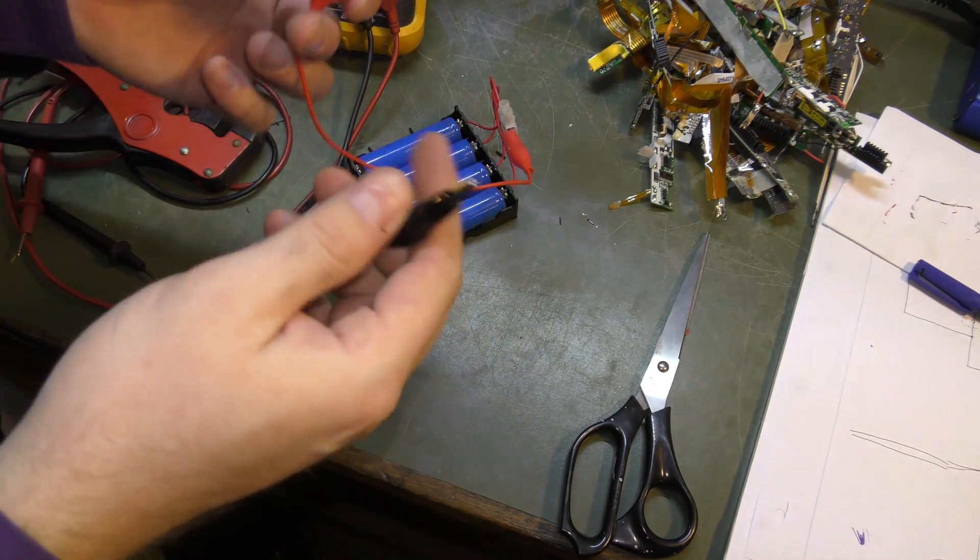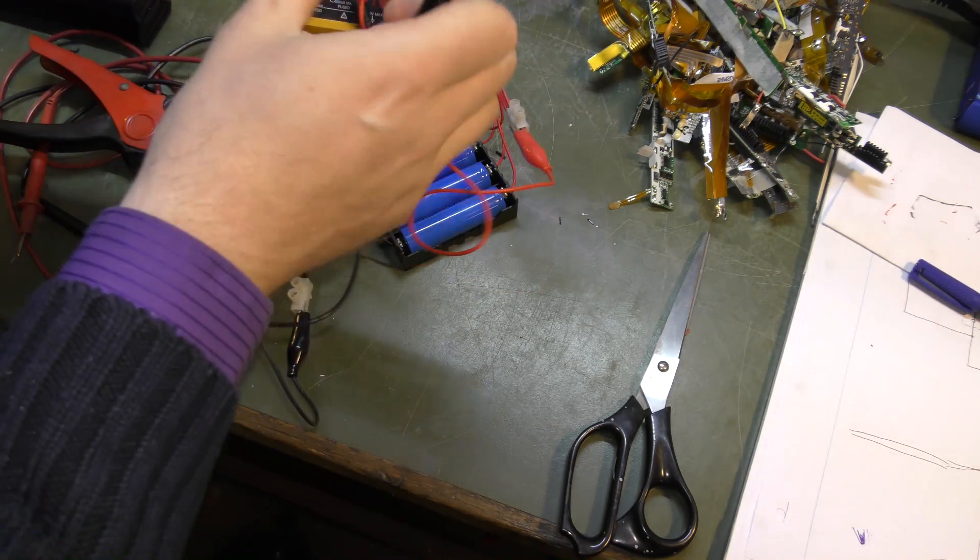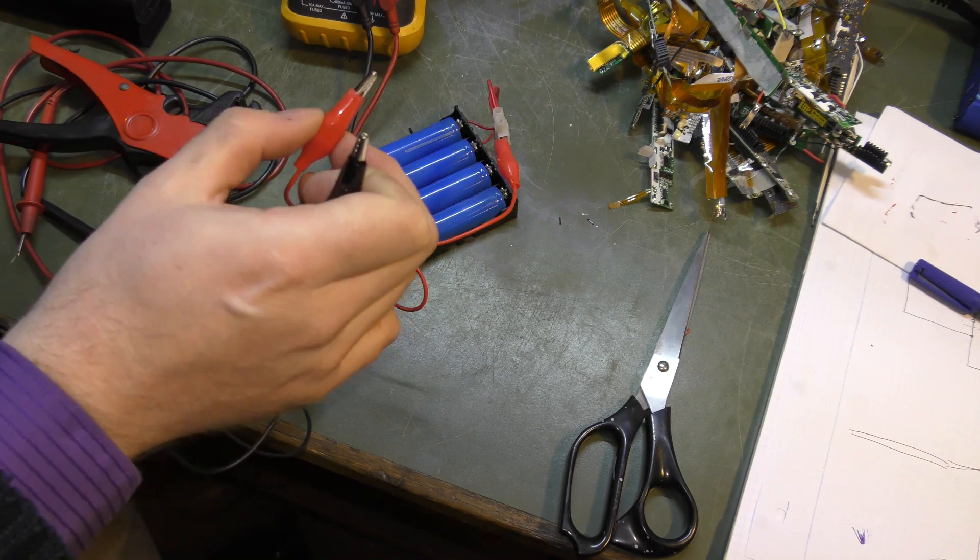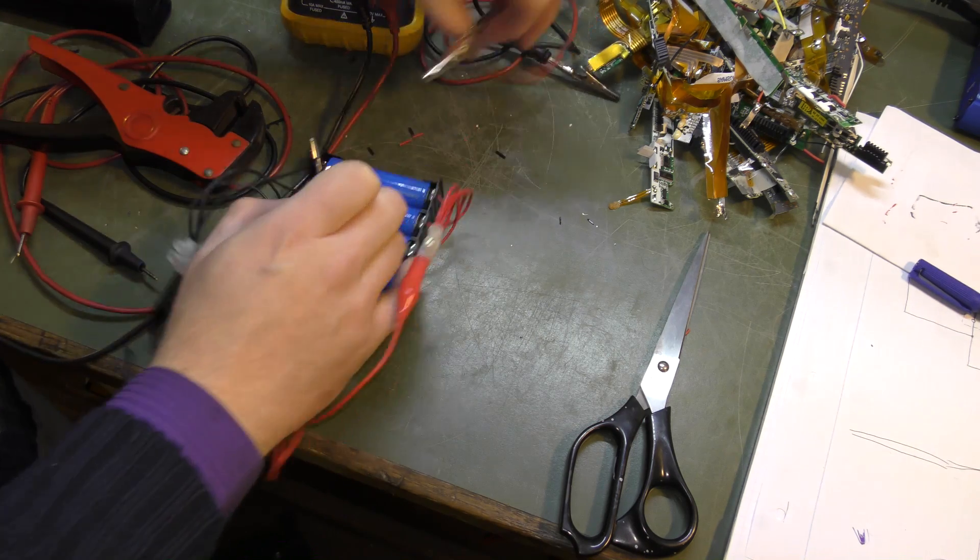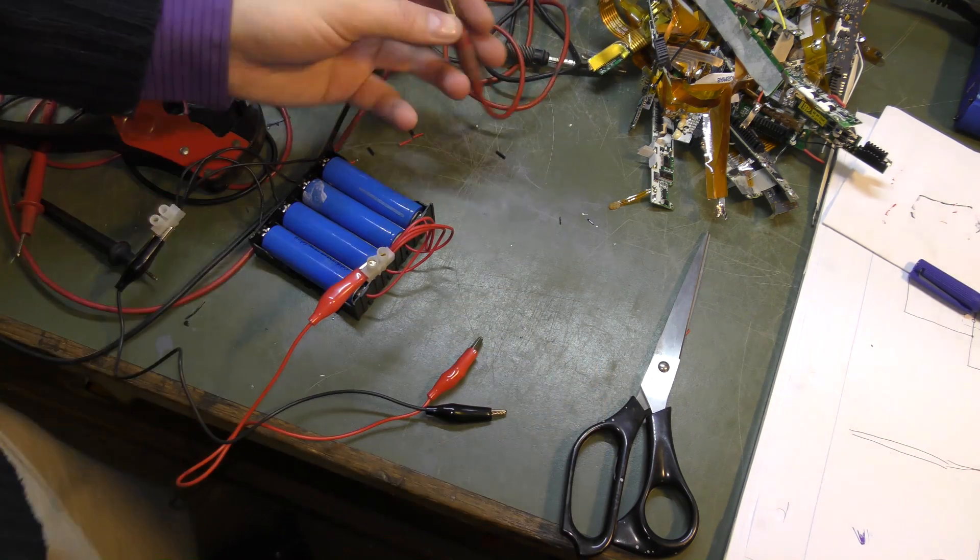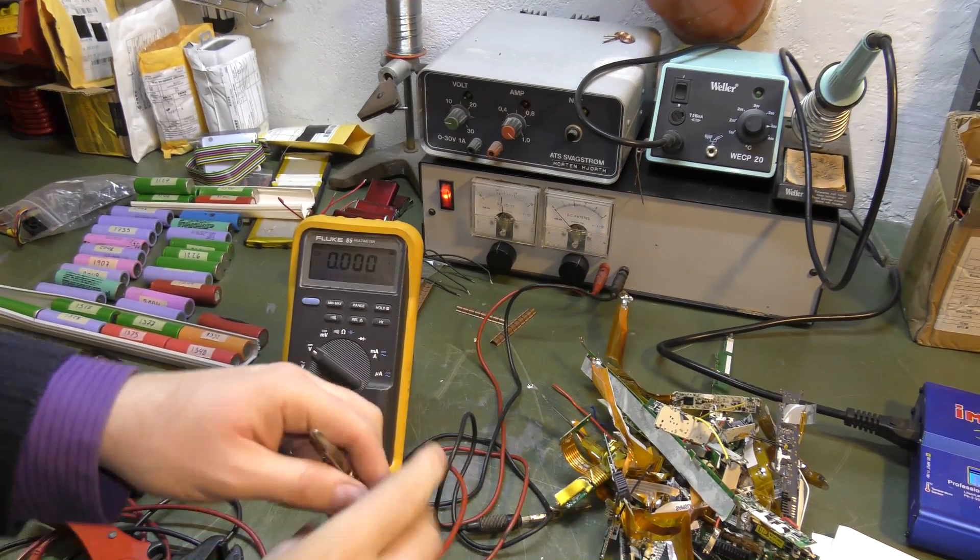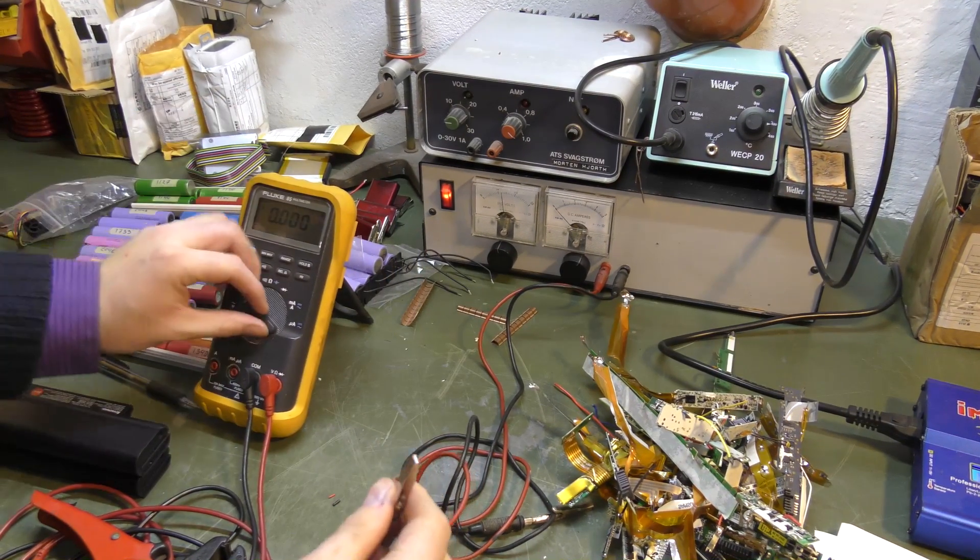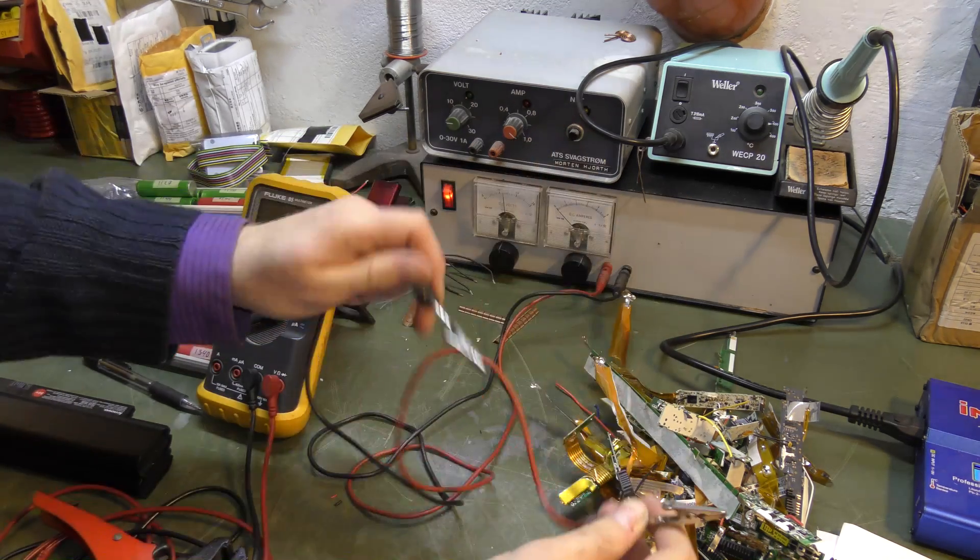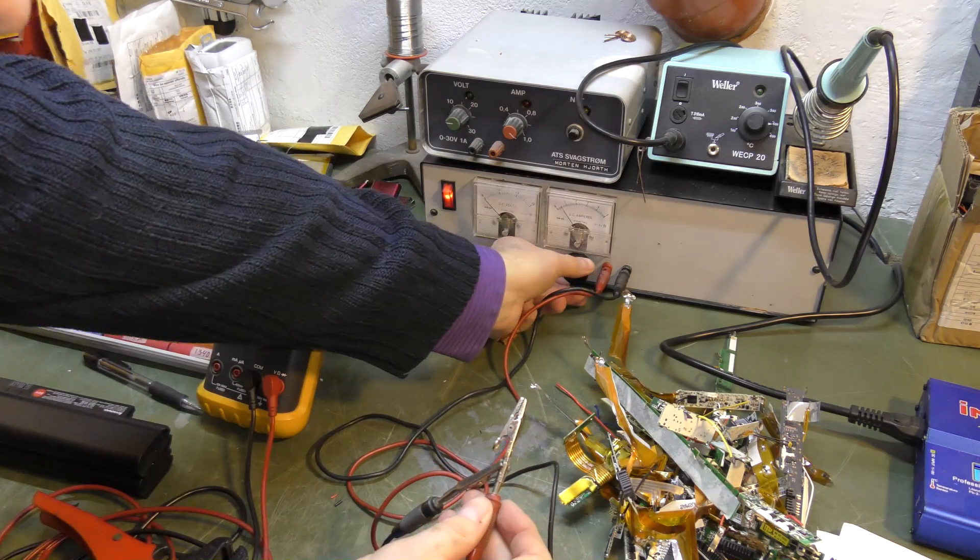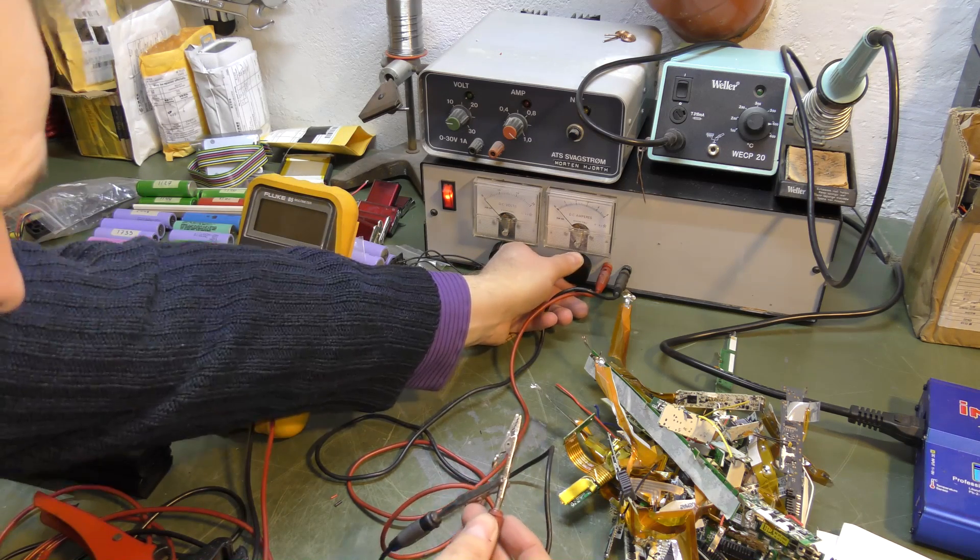And I got a couple of my new alligator leads, test leads here that I just got from China. We're going to test those out. And we're going to put some voltage on this. First, we're going to make sure... I have the power supply just outside of here. I'm going to make sure that I'm not sending in a lot of current. So we're going to short circuit those and I'm going to turn it down to about 100 milliamps. That's around there.